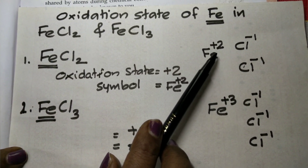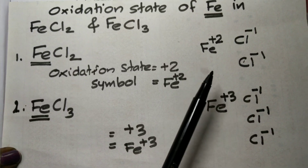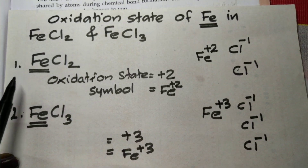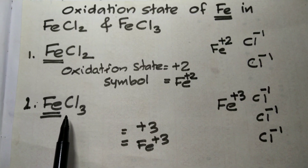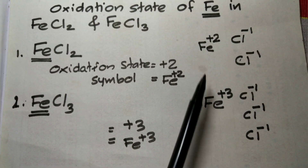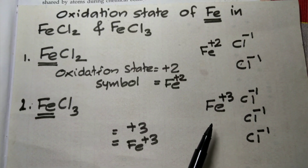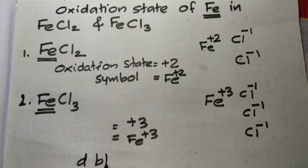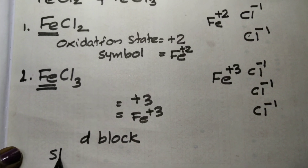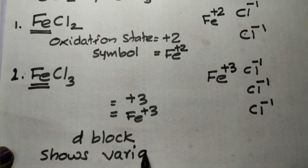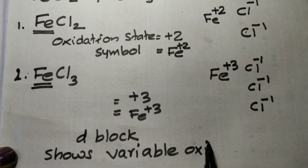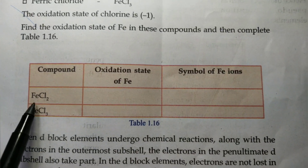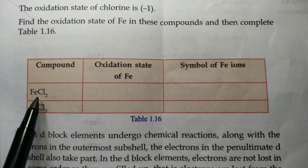This shows that Fe can have plus 2 and plus 3 oxidation states. This is the property of D-block elements — they show variable oxidation states. Fe is a D-block element with oxidation states plus 2 and plus 3.